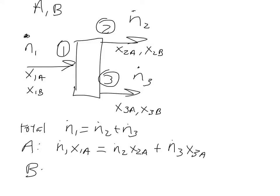And we can write out our B balance: N1 times x1B equals N2 times x2B plus N3 times x3B. So these are three different equations, but I want to show you that they are not independent of each other.